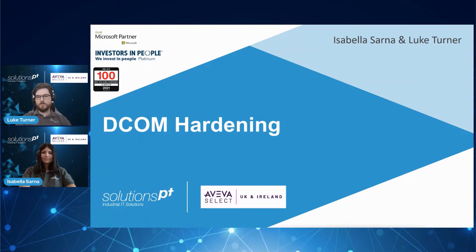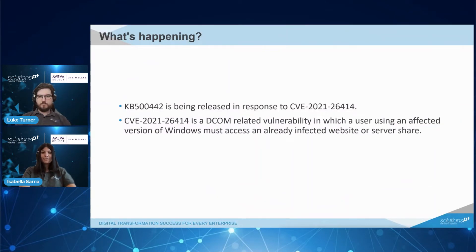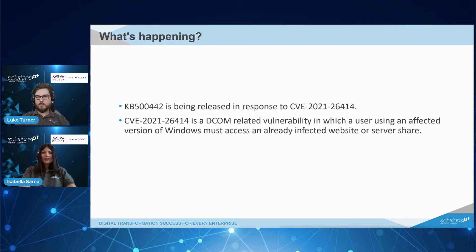KB5004442 is being released in response to CVE-2021-26414. This affects DCOM communications. This CVE is a DCOM-related vulnerability in which a user using affected versions of Windows must access an already infected website or server share. This is only exploitable if the user explicitly visits the location and can't be forced externally — only internally — so phishing is the main vector of the attack for this exploit.